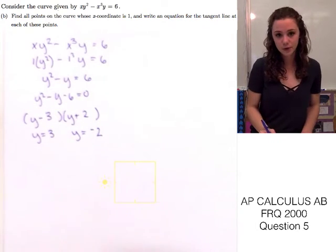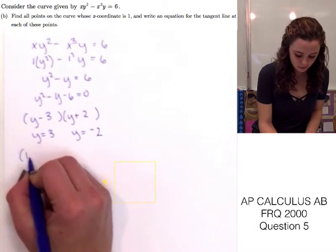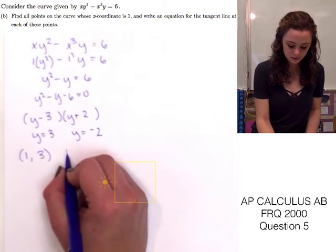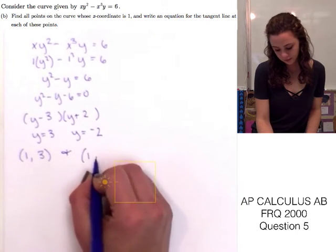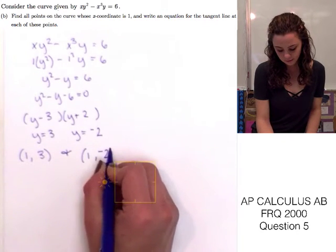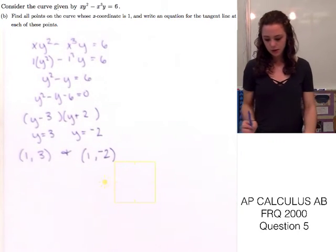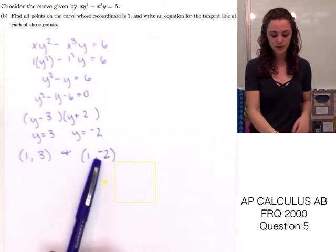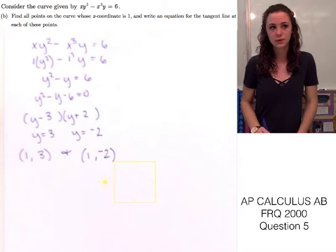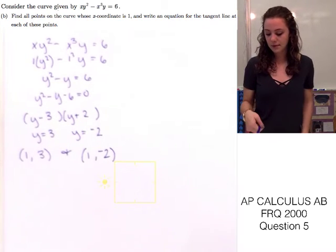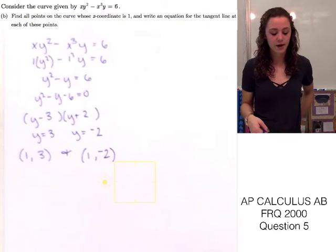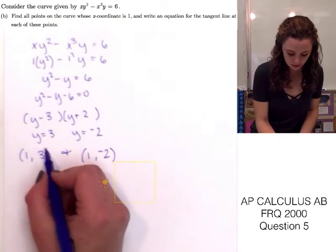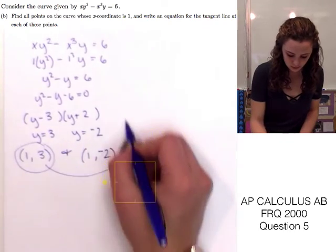So the two points are (1, 3) and (1, -2). From there, we're going to plug both sets of coordinates into the derivative equation found in Part A to find the slope of the tangent lines at each point. Let's start with the first one.